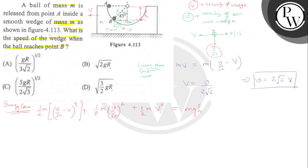We find h = r·cos45 = r/√2. So the energy equation becomes mgh = mg·r/√2. After cancelling m on both sides and substituting the value of small v as 2√2·V, we can solve for capital V.